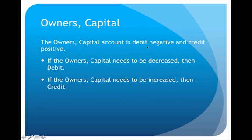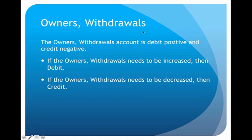Then we have the capital account, which follows a debit negative, credit positive behavior pattern. If something has happened that decreases capital, that requires a debit; if capital is being increased, that requires a credit. The withdrawal account has a different behavior — it's debit positive and credit negative. If you want the withdrawal account to increase you would debit it, and if you want it to decrease that requires a credit.